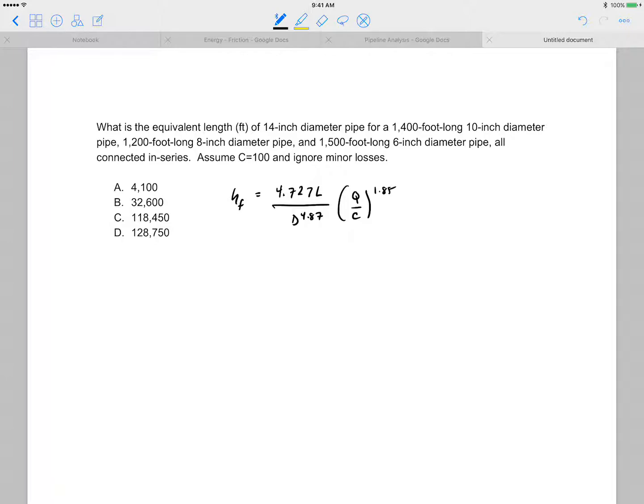So we have to summarize all of this. We can say that the sum of the friction losses are 4.727 times, first we have 1,400 foot of 10 over 12 raised to the 4.87,